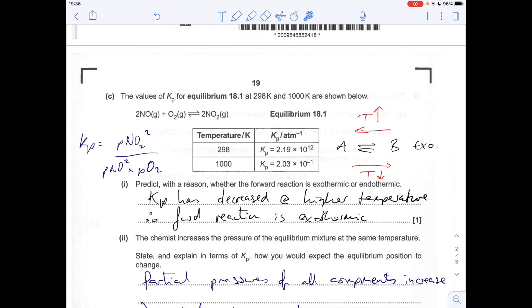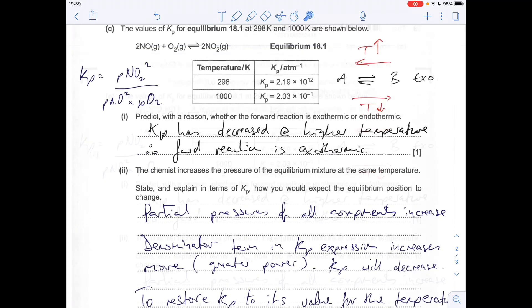What sort of reaction favors an increase in temperature? It's the endothermic direction. So the reverse reaction must be endothermic because that temperature increase favored the reactant side. Therefore, the forward reaction must be exothermic. I would write: Kp decreased at the higher temperature, therefore the forward reaction is exothermic.